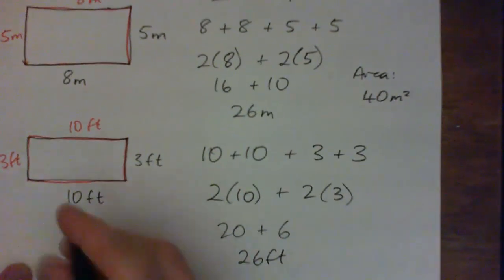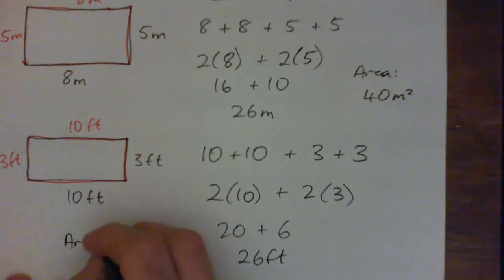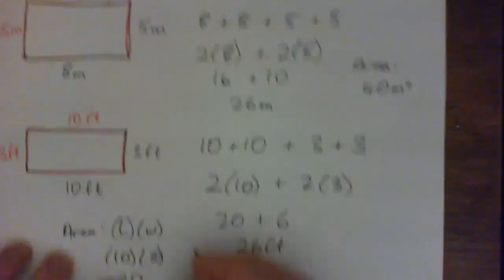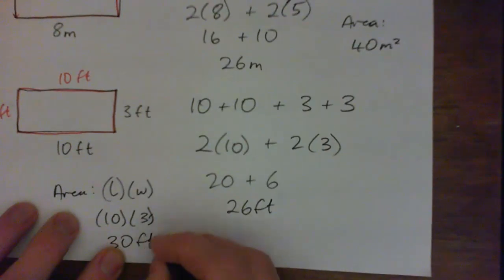And just as an aside, the area of this rectangle is the length times the width, so it's 10 times 3, which is 30 square feet, feet squared.